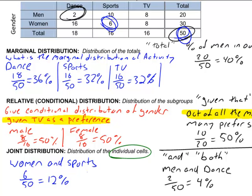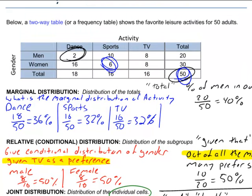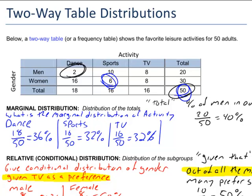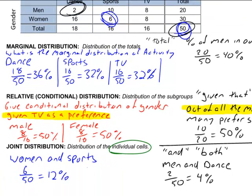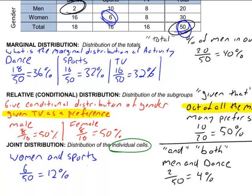That's how you do two-way table distributions: marginal, relative, and joint. Thank you.